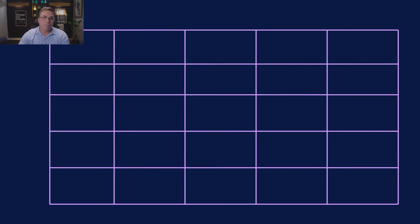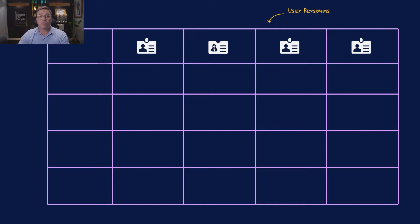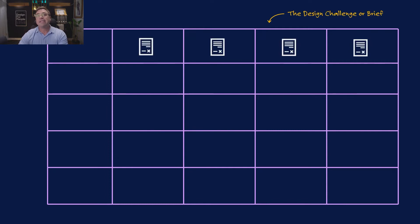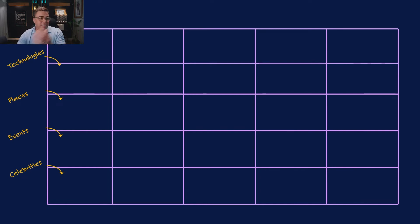Now, if we bring the grid back up, let's look at the top section — the people categories. These could be market segments, user personas you've created or surfaced through research, or the design challenge or creative brief itself. Here, I've broken down four different parts of the design brief. Moving to the rows, these can be enablers around technologies, places, events, celebrities — just a select few. You can come up with a lot more enabler categories.